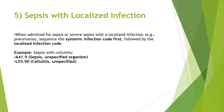Next: sepsis with localized infection. If the patient has sepsis along with a localized infection — for example, sepsis with cellulitis — sequence the systemic infection code first, followed by the localized infection code. So sepsis is coded as primary and cellulitis as a secondary code. This is the guideline regarding sepsis with localized infection.